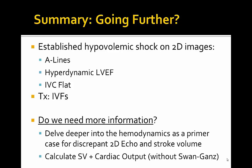Do we really need any more information? Why is this a starting point for our POCUS hemodynamic series? We want to point out a couple of things regarding delving deeper into hemodynamics. We want to start with a case that shows discrepant 2D echo findings — a normal ejection fraction does not necessarily equate to a normal stroke volume. Even without a Swan-Ganz catheter, we can calculate stroke volume and cardiac output in this patient.